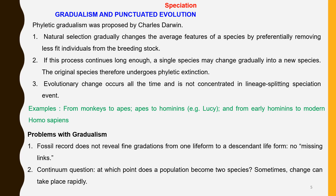However, this theory failed to explain as to when exactly a population became two species. Fossil records too do not show a gradation from one life form to another. There have been no missing links.